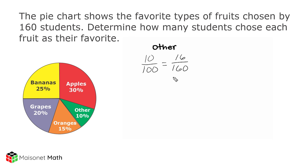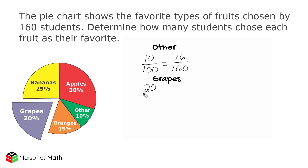Now what we should remember is this: because 10% for this pie chart represents 16 students, we know if we double 10, we would have to double 16. Looking at the category of grapes, we can see that 20% chose that as their favorite. Because we know that 16 represents 10%, we just double 16, which is 32.